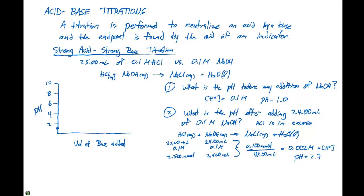Looking at the volume of base added in five milliliter increments — 5, 10, 15, 20, 25 — we start with a pH of 1, and we go up to 2.7 when we add 24 milliliters, which is right around here. So our initial pH gradually increases along this portion of the curve.